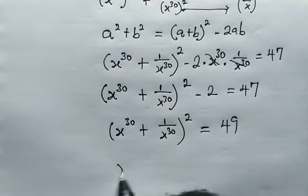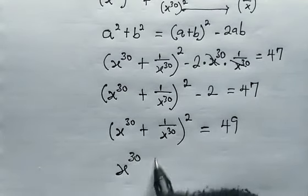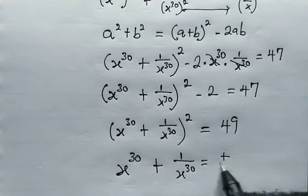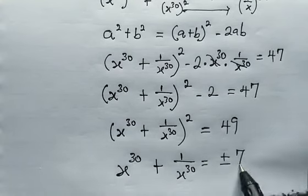Take the square root of both sides, we get the answer to the question that x to the power of 30 plus 1 over x to the power of 30 equals plus or minus square root of 49, which is 7.